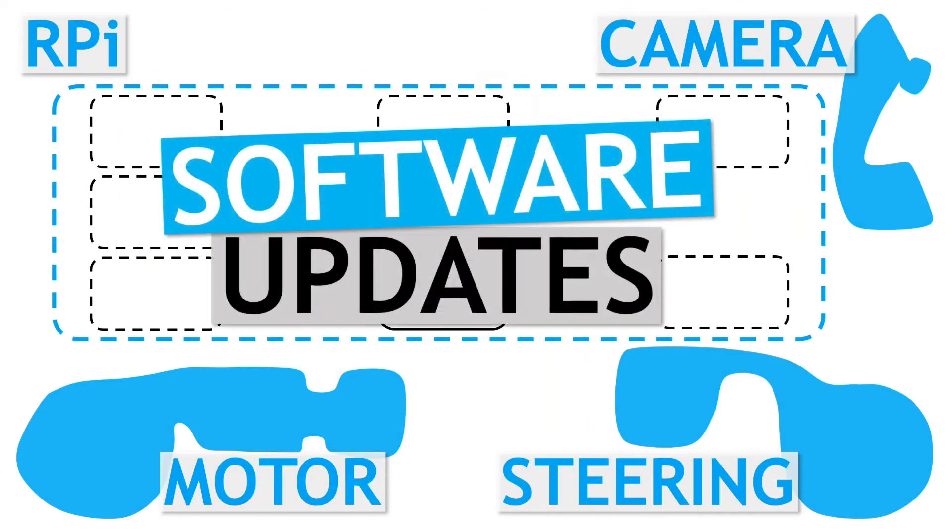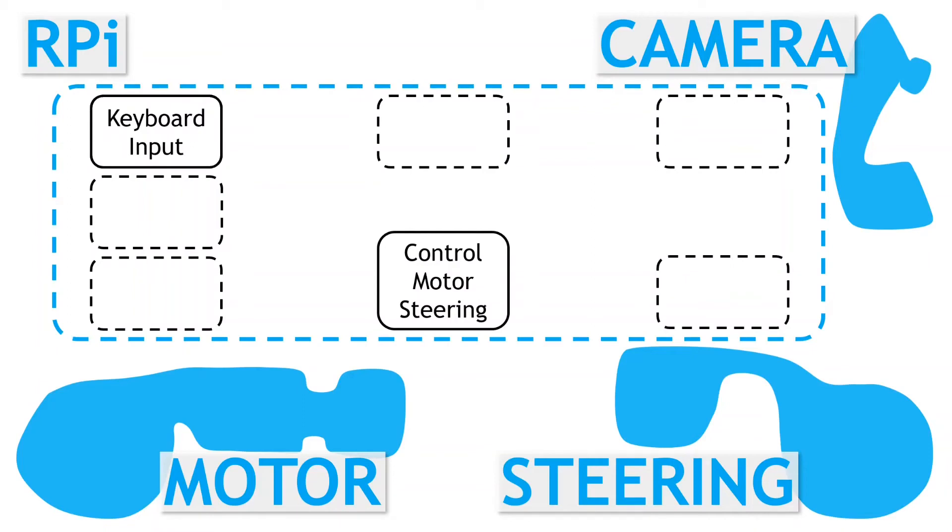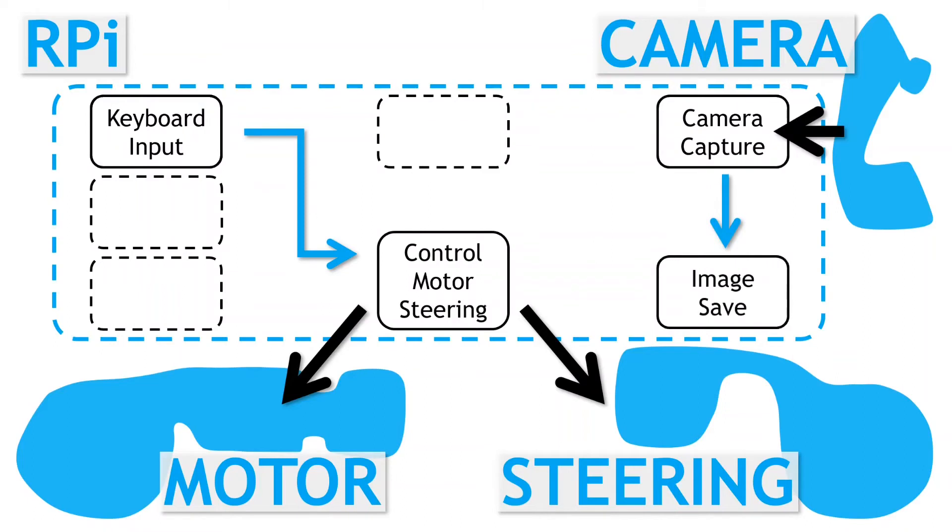A quick refresh. When training, we take the expert driver inputs via the keyboard, which pass through the controlling module and get sent out to the speed controller and the steering servo. We capture the images from the camera and save them. Same with the control data. Together, this data is used to produce the training data.